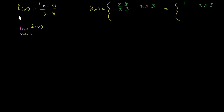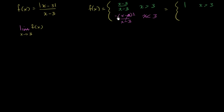Similarly, let's think about what happens when x is less than 3. When x is less than 3, x minus 3 is going to be a negative number. When you take the absolute value of that, you're essentially negating it, so it's going to be the negative of x minus 3 over x minus 3. This simplifies to negative 1, as long as x does not equal 3. So f of x equals negative 1 for x less than 3.